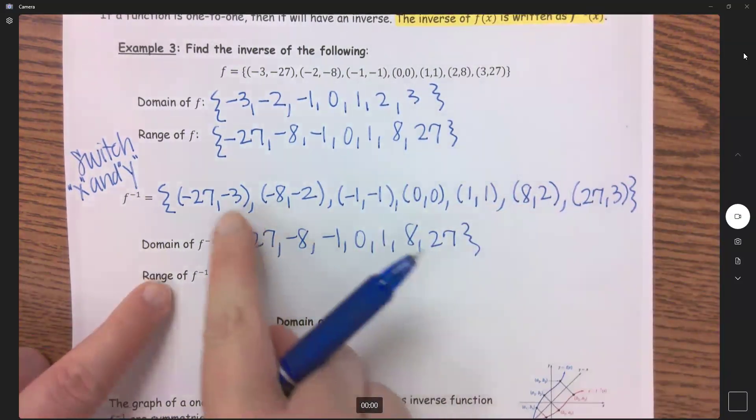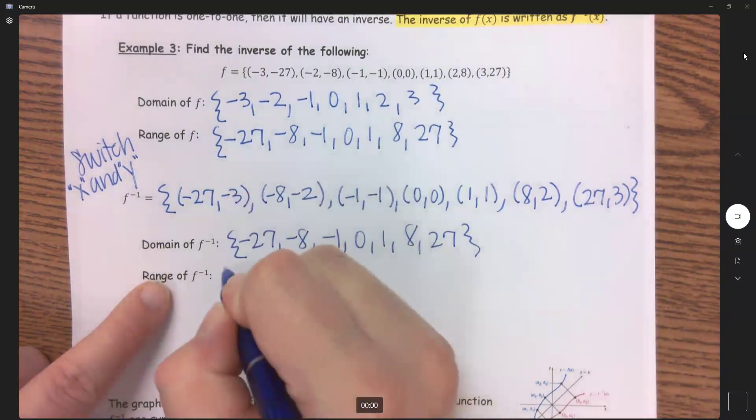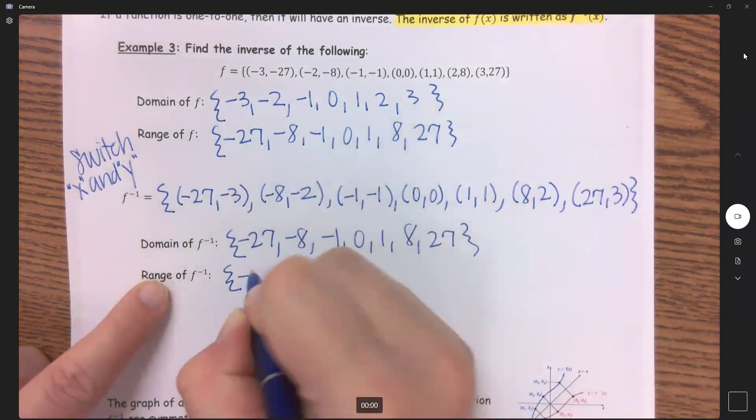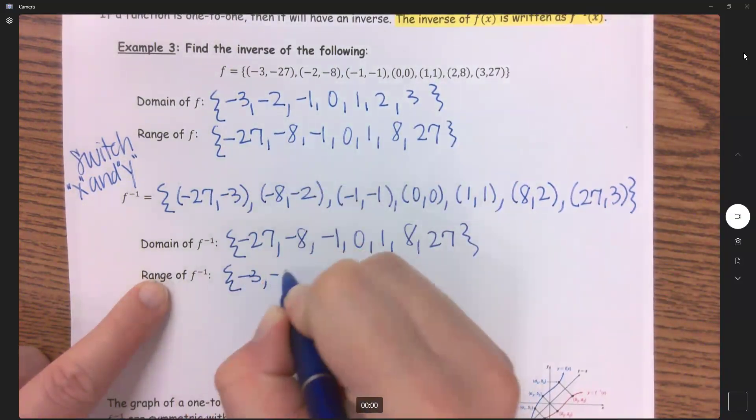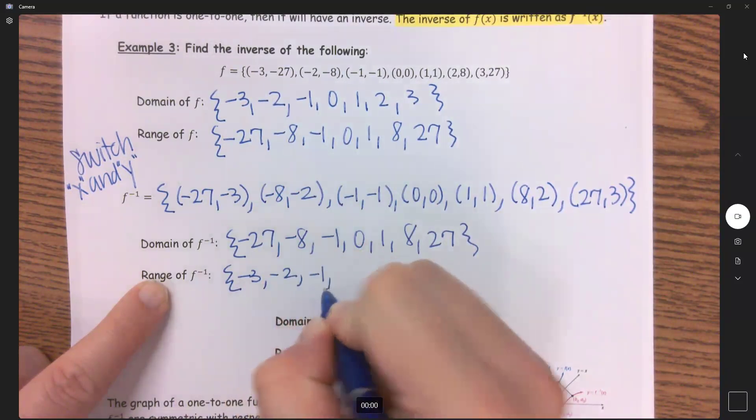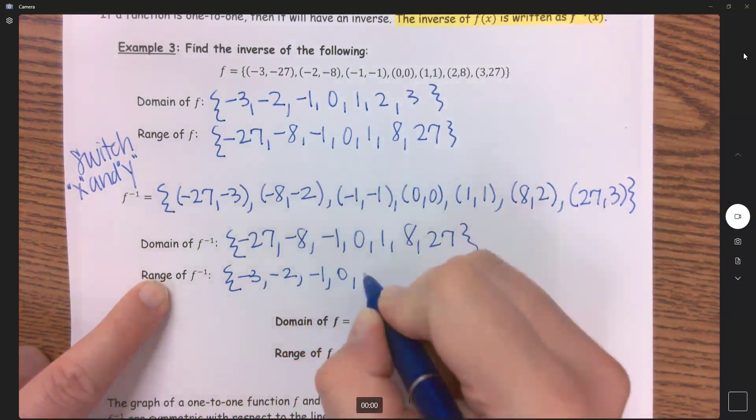And then my range are all of my y coordinates. So negative 3, negative 2, negative 1, 0, 1, 2, 3.